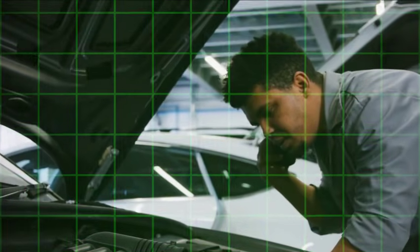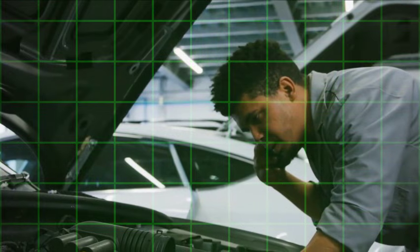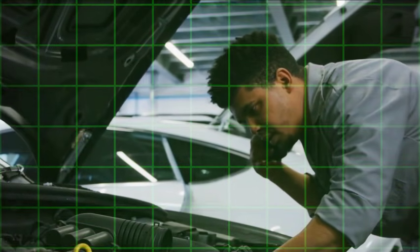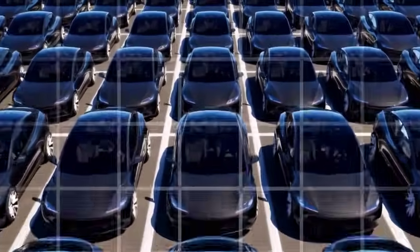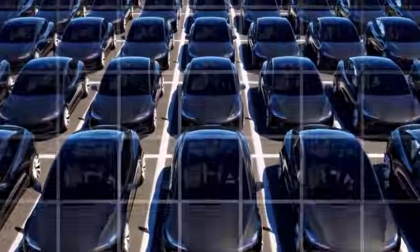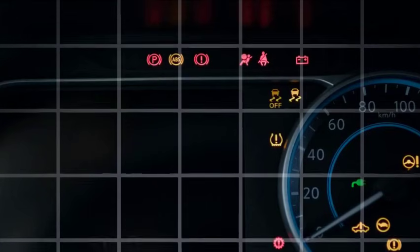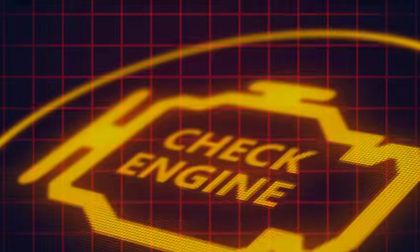How Auto Stop Start Works: Auto Stop Start Systems function by automatically shutting off the engine when the vehicle comes to a complete stop, such as at traffic lights or in heavy traffic, and restarting it when the driver lifts their foot off the brake in automatic cars or engages the clutch in manual cars. This system is intended to minimize idling time, thereby reducing fuel consumption and emissions.